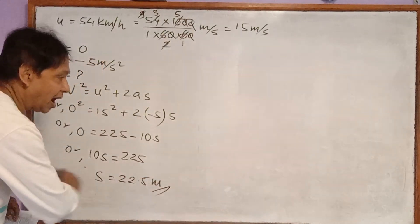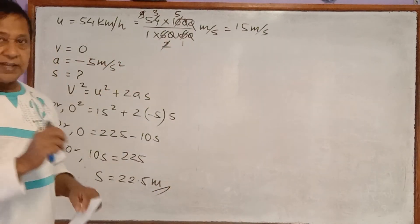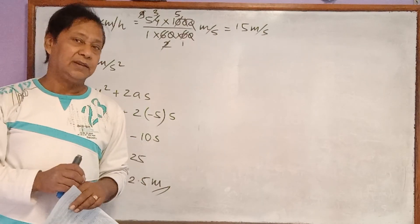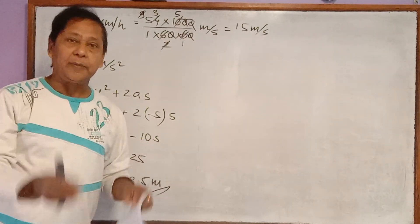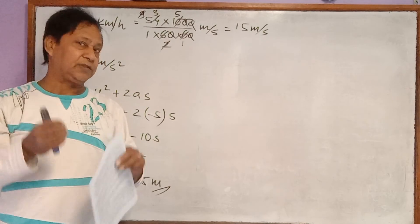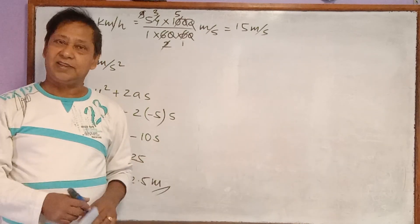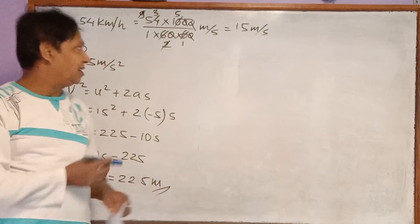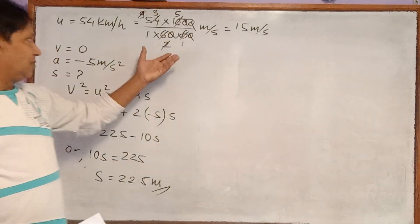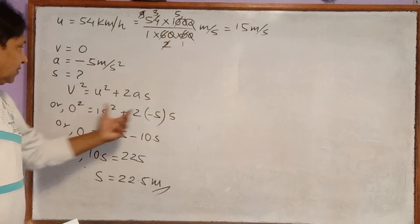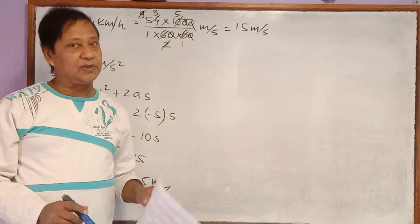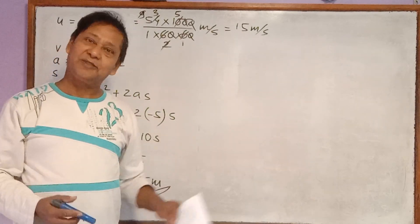This way we have to argue. Since the boy is at the distance of 25 meter and the car is stopped at the distance of 22.5 meter, accident doesn't occur. This is the method of solving this numerical problem using v square equal to u square plus 2 a s. This much for today.